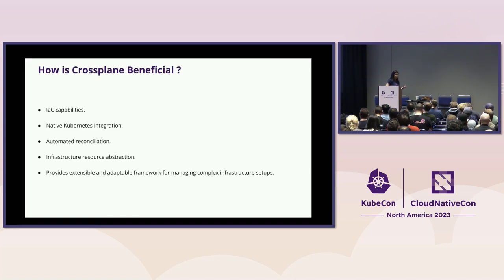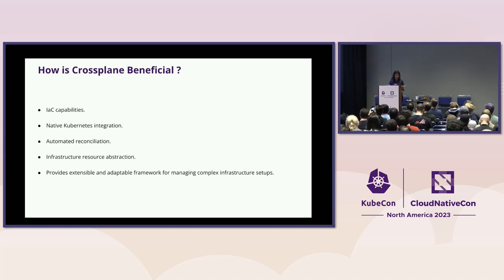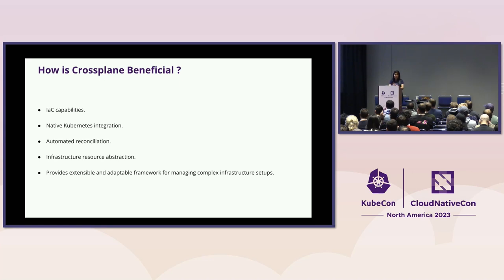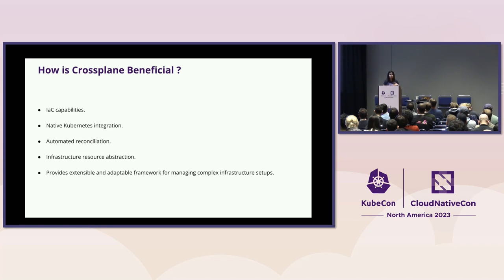All of this can be done using Crossplane, and we'll talk about how Crossplane composition can help you automate production-ready clusters. Crossplane is an infrastructure-as-code tool, so it can help you with all IAC capabilities. You can create infrastructure using code, have that code in GitHub, track it, do version control, rollback, troubleshoot, audit, scan it for security — all the cool stuff we talk about with IAC. Crossplane gives you all of that.